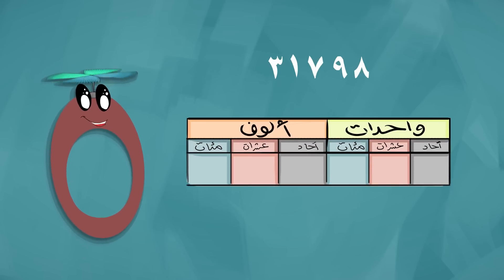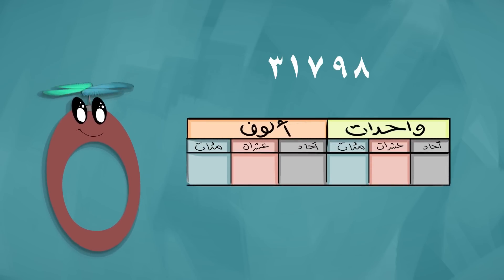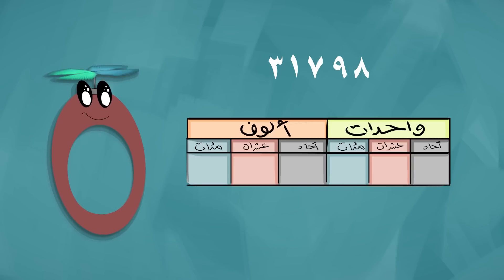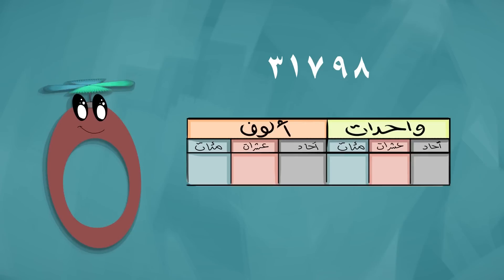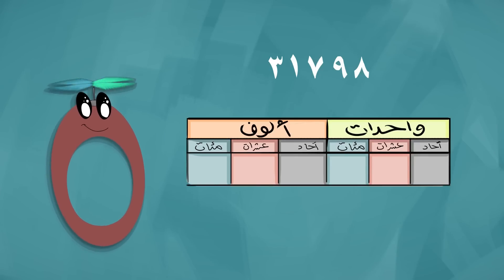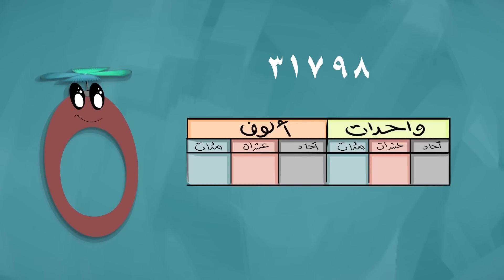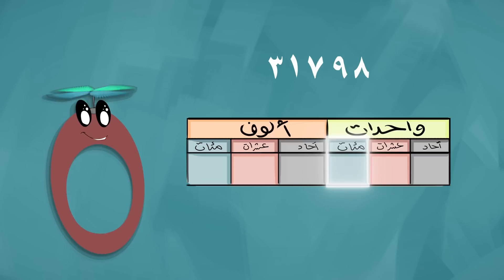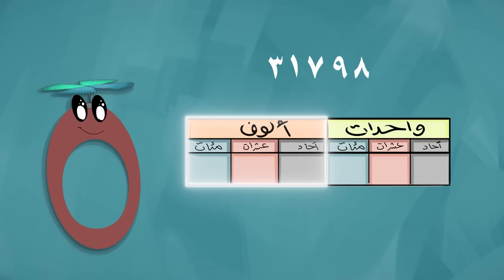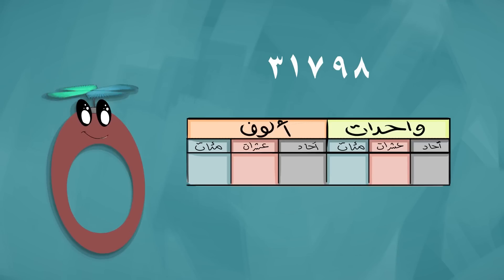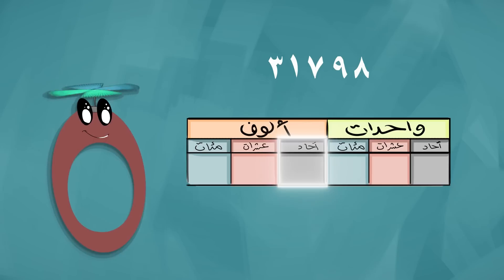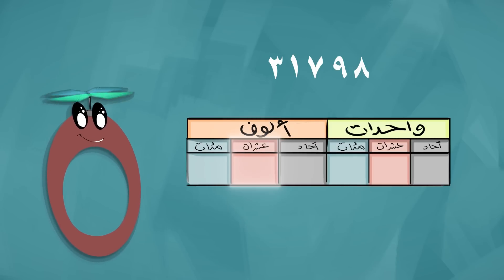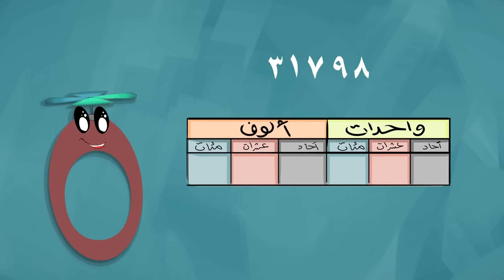كل عدد من هذه الأعداد يتكون من قسمين: الأول قسم الواحدات ويتكون من ثلاث منازل وهي آحاد وعشرات ومئات. والثاني قسم الألوف ويتكون من ثلاث منازل أيضاً: وهي آحاد الألوف وعشرات الألوف ومئات الألوف.